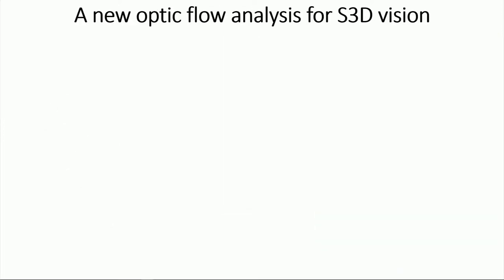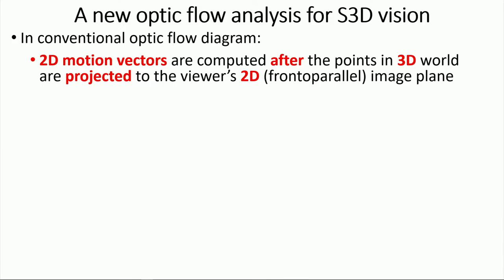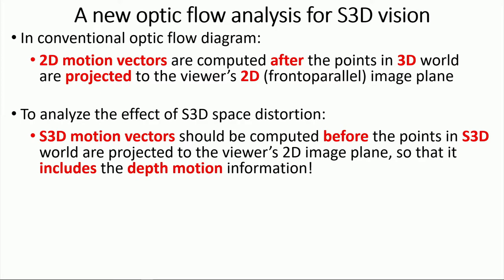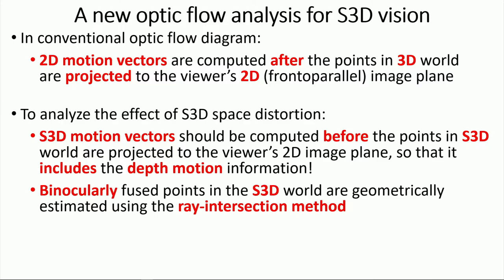In conventional optic flow diagrams, 2D motion vectors are computed after the points in the 3D are projected to the viewer's 2D retina image plane. To include the depth motion in the optic flow analysis, 3D motion vectors should be computed before the points in the 3D world are projected to the viewer's image plane. I use the binocular fused point in the stereoscopic world geometrically estimated using the ray intersection method.